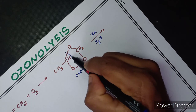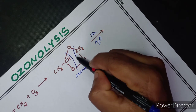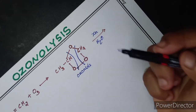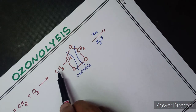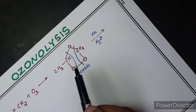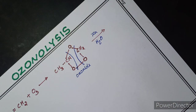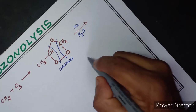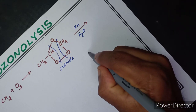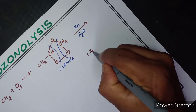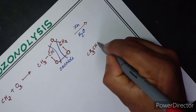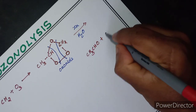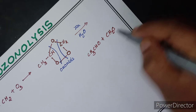We will break this ozonide here. We have two portions, two sections: CH3CHO and CH2O. We will change to the product — we have one product, CH3CHO, and CH2O.